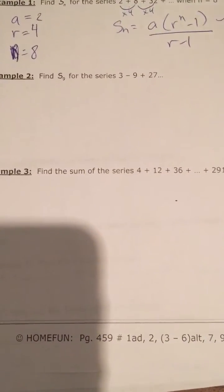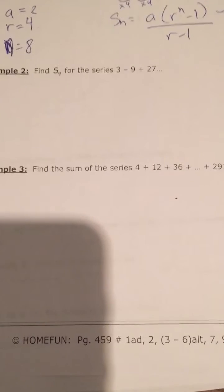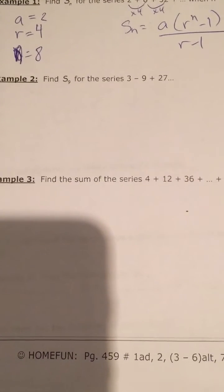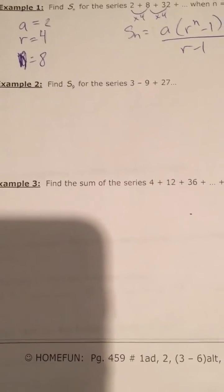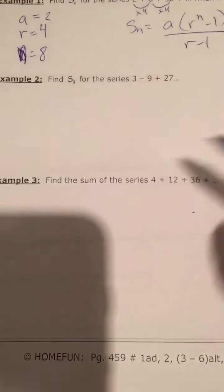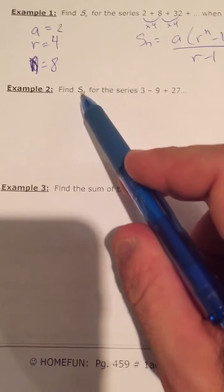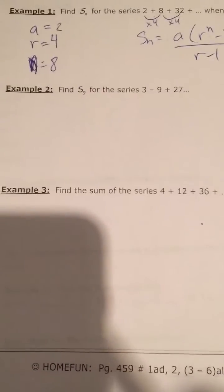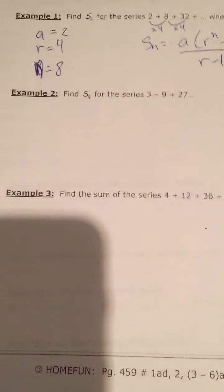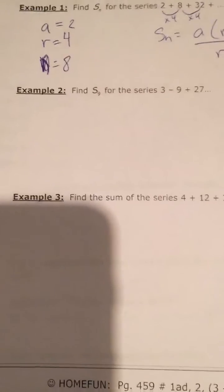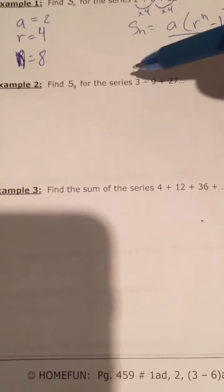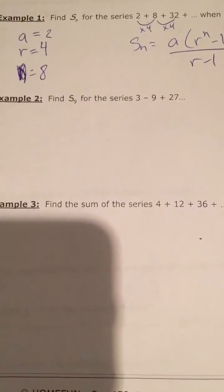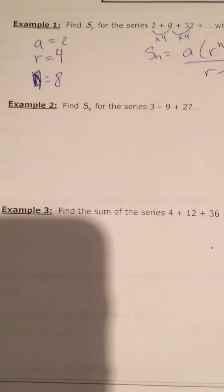Example 2: find the sum of the first 9 terms for the series 3, negative 9, 27, and so forth. Remember, the sum of the first 9 terms is very different from term number 9. Term number 9 is just the 9th term alone. S9, or the sum of the first 9 terms, is what you get when you have 9 terms in front of you and add them all together.